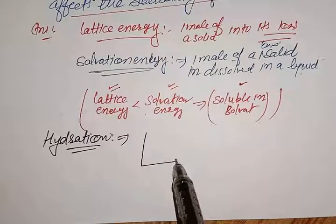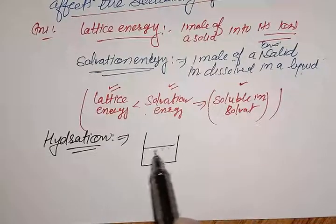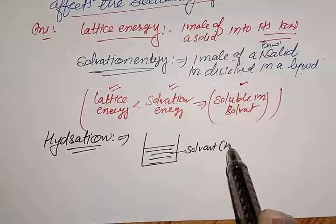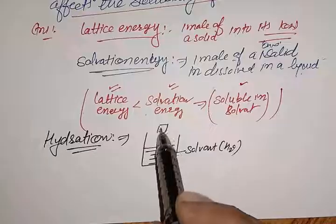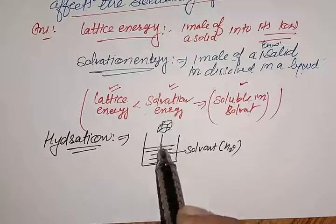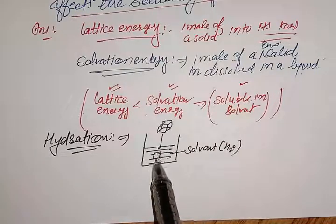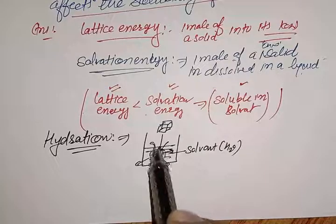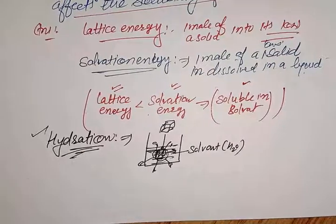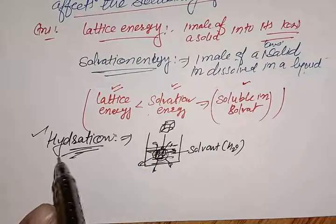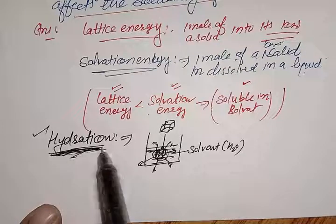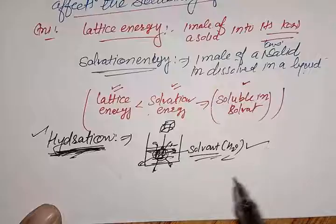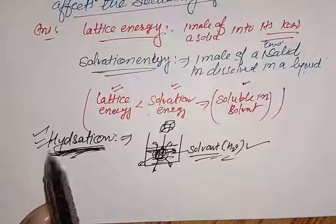The next term is hydration enthalpy. If the solvent is water and we add a particular ionic solid in water, the amount of energy released is called hydration enthalpy. Hydration enthalpy is the same as solvation energy, but the specific term used when the solvent is water.